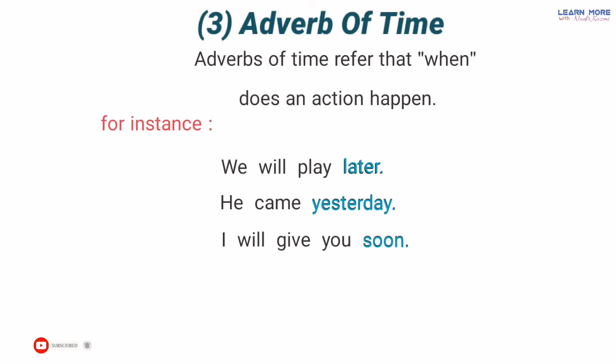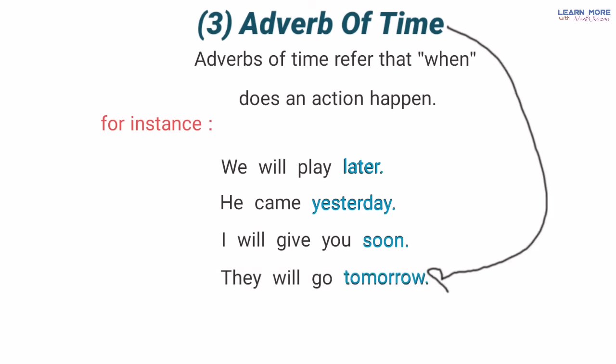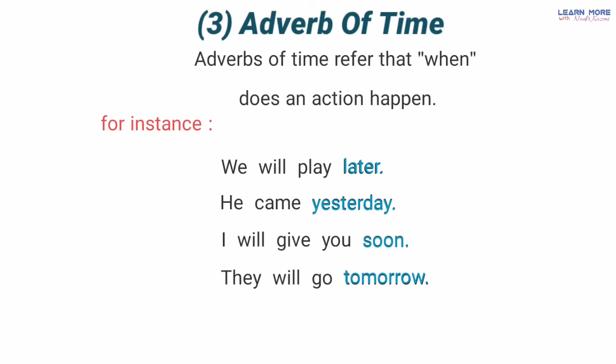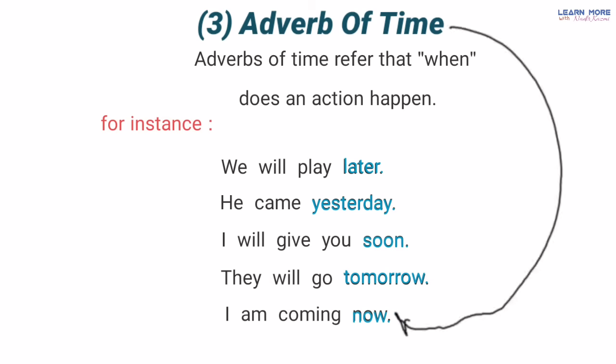'When will they go?' — woh kab jaenge? 'They will go tomorrow' — woh kal jaenge. Ab 'tomorrow' bhi ek adverb of time hai kyunke yeh unke kaam ke time ke baare mein bata raha hai ke woh kab jaenge — tomorrow, kal. 'When are you coming?' — aab kab aa rahe ho? 'I'm coming now' — main abhi aa raha hoon. Ab jo 'now' hai yeh bhi ek adverb of time hai kyunke yeh mere kaam ke baare mein bata raha hai ke main kab kar raha hoon — abhi aa raha hoon.